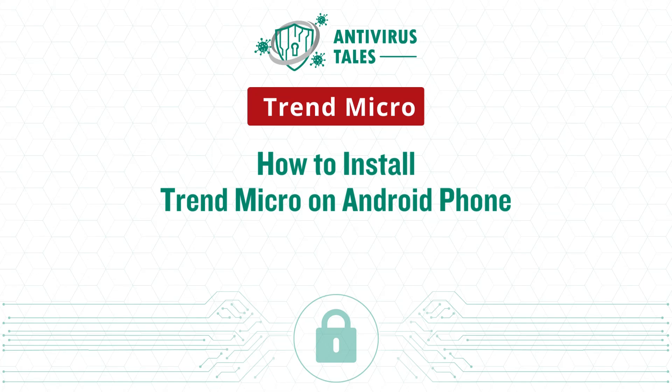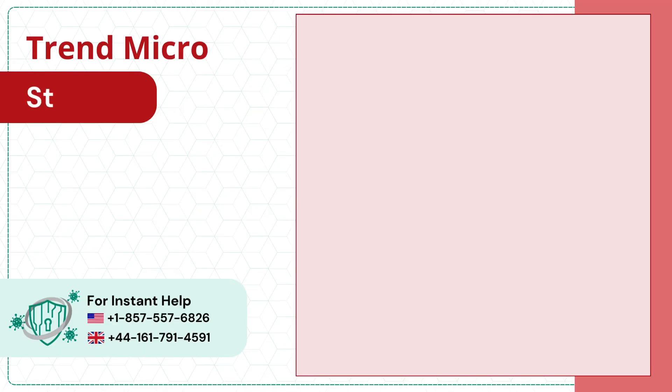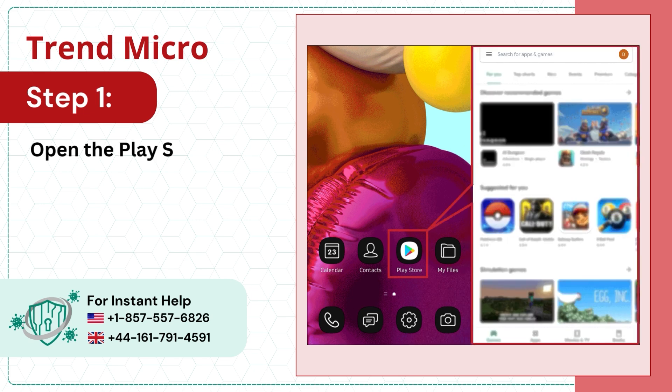How to install Trend Micro on Android phone. Step 1: Open the Play Store on your device.